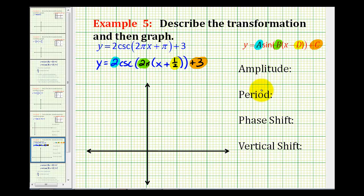Now let's go ahead and list the amplitude period, phase shift, and vertical shift for the cosecant function. Be careful because cosecant does not have an amplitude, so there is no amplitude. Remember, cosecant extends upward and downward forever.